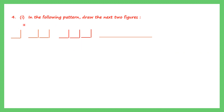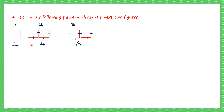Question 4, part one: in the following pattern, draw the next two figures. Here we have figure 1, figure 2 and figure 3 made of matchsticks. Counting the matchsticks: figure 1 has 2, figure 2 has 4, figure 3 has 6. We can see 2 + 2 = 4, 4 + 2 = 6 — the pattern increases by 2 matchsticks each time. So figure 4 will have 8 and figure 5 will have 10.